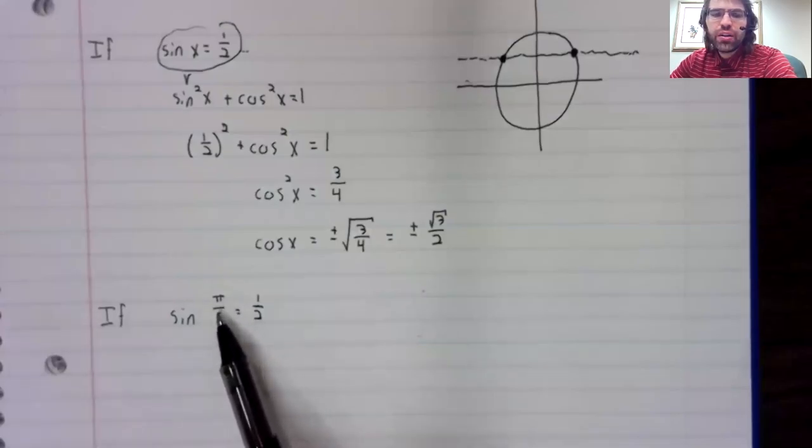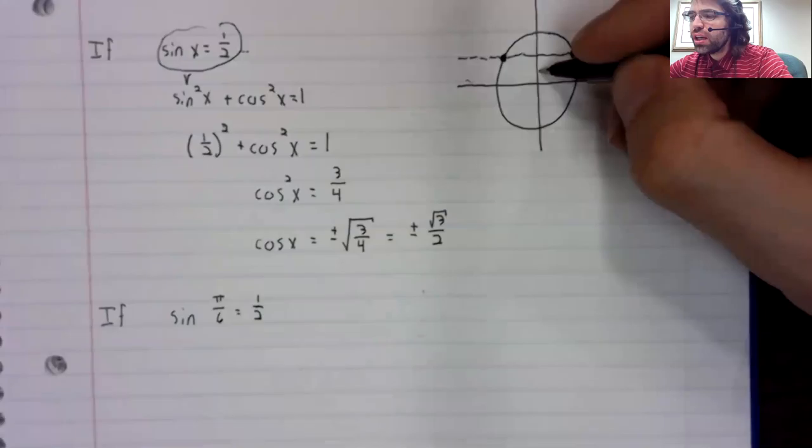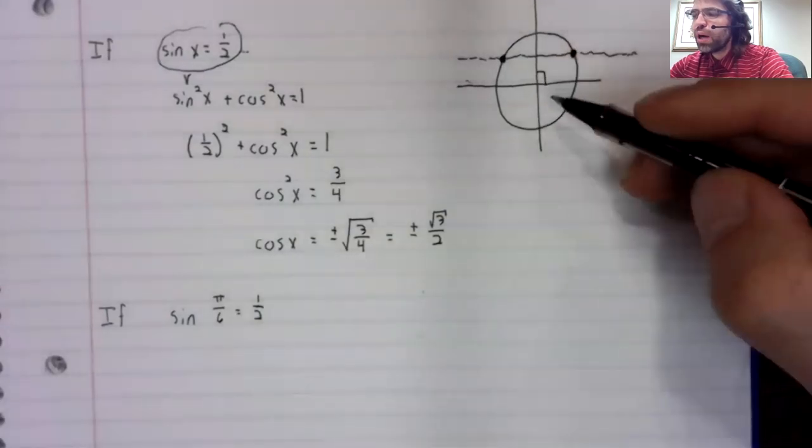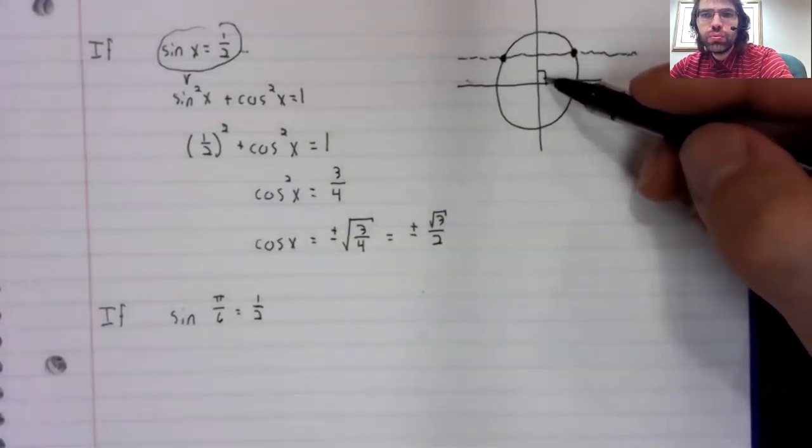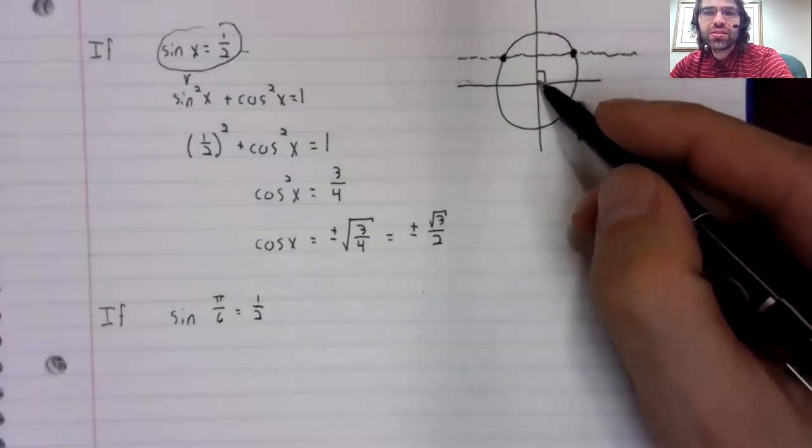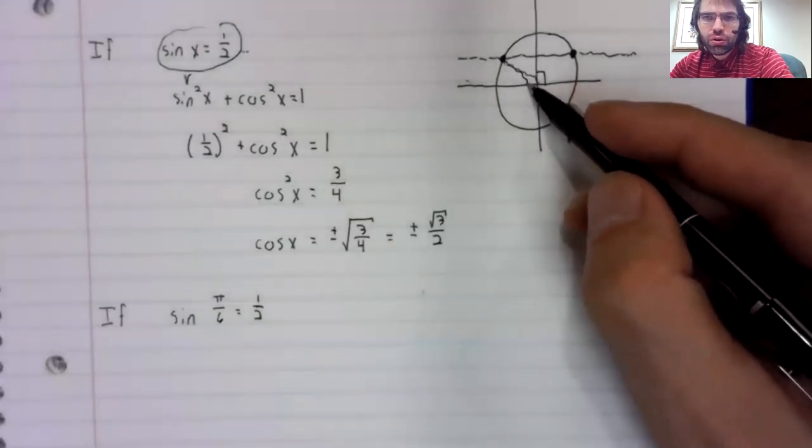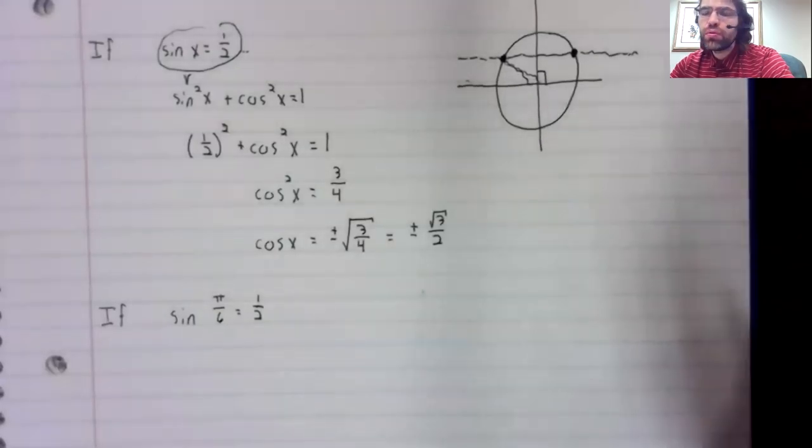Pi divided by six is in the first quadrant. Remember that this is pi divided by two. So pi divided by six is less than that. This would be greater than pi over two.